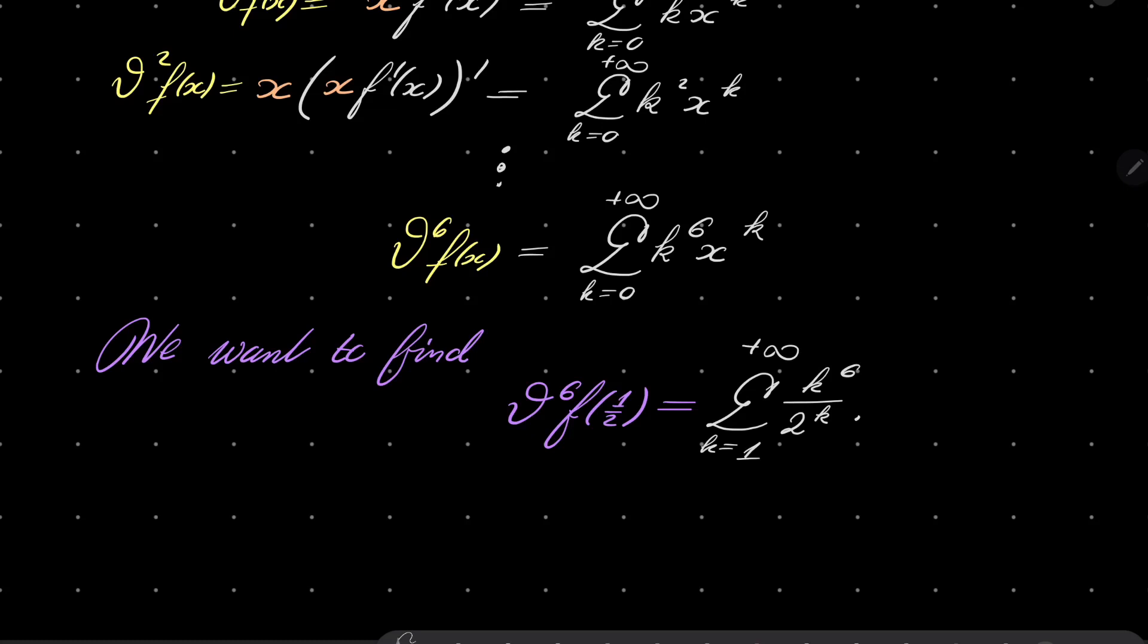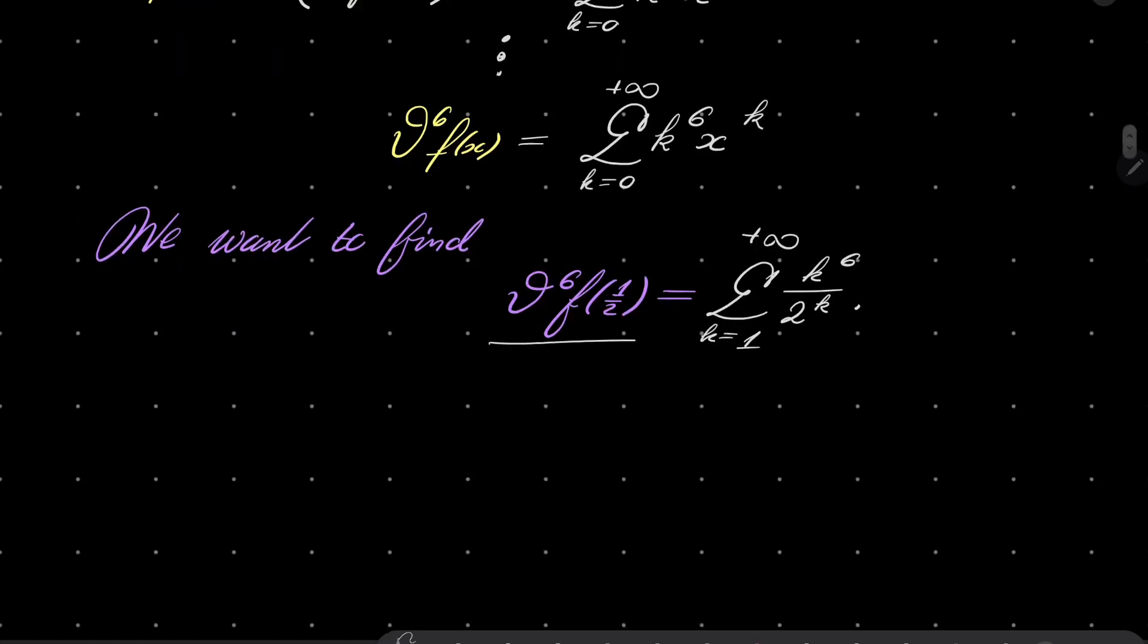And also notice that we can start summation at one because for k equals zero we have zero term. And now comes the ugly part. We have to actually differentiate it, multiply by x, differentiate it again, multiply by x again.